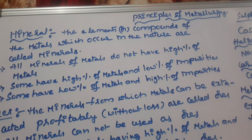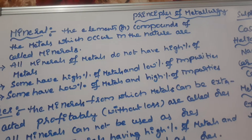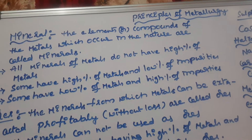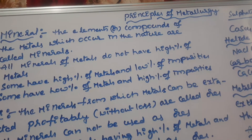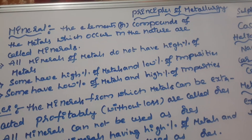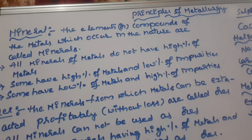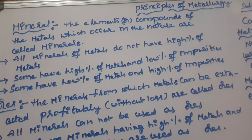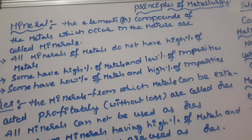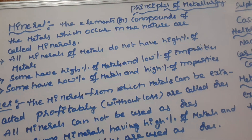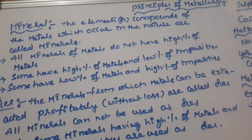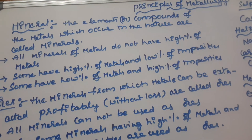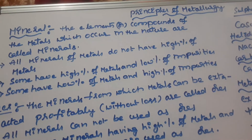Welcome to our physics class. In this class we are going to learn some basic terms and definitions in the 10th class physical science chapter: Principles of Metallurgy. Principles of metallurgy is everything about metals. In the lower classes you may have studied about metals and their properties — metals are good conductors of heat and electricity and can exhibit properties like sonority, malleability, and ductility.